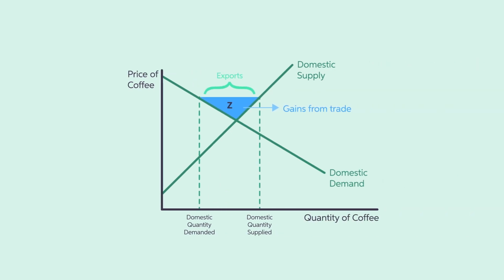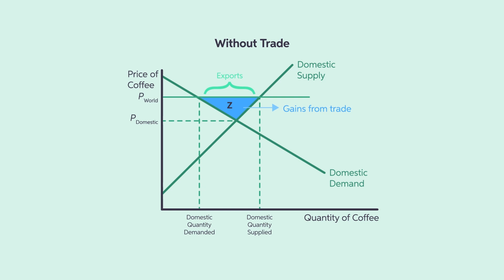Let's revisit the market for coffee, this time with trade. In this figure, P domestic represents the domestic price of coffee and P world is the price of coffee in the world market. Since P domestic is less than P world, the country will export coffee. When trade is allowed, the domestic price rises to equal the world price. Let's compare the welfare effects of free trade with the outcome without free trade. Without trade, consumer surplus equals X plus Y and producer surplus equals W. The total surplus equals X plus Y plus W.